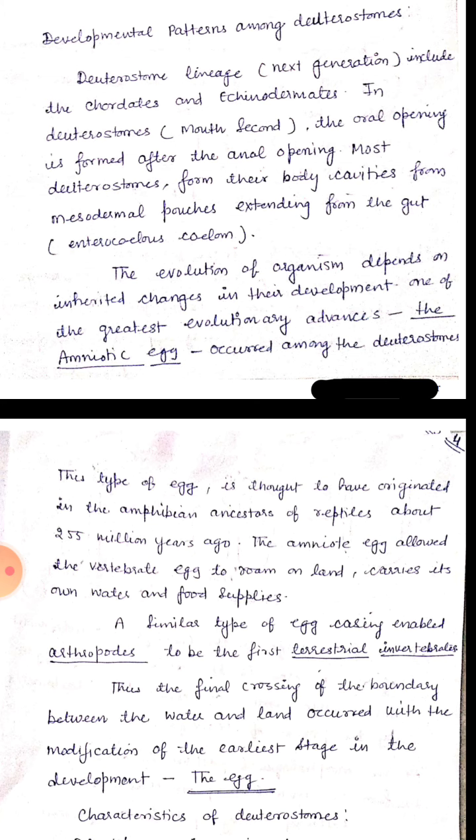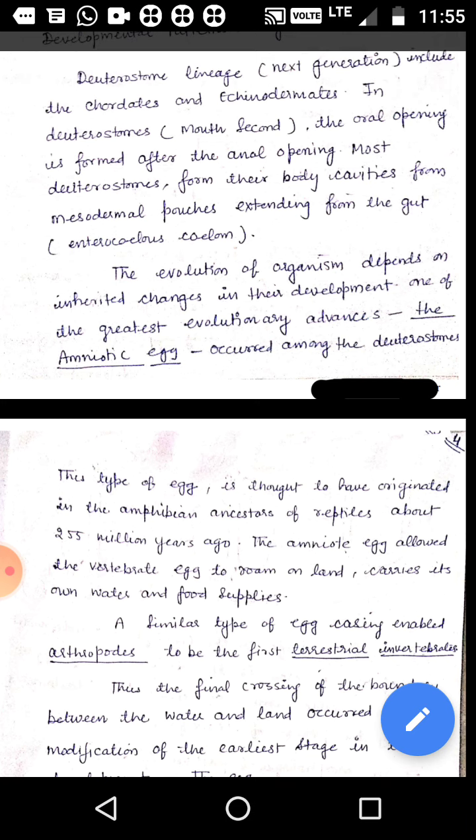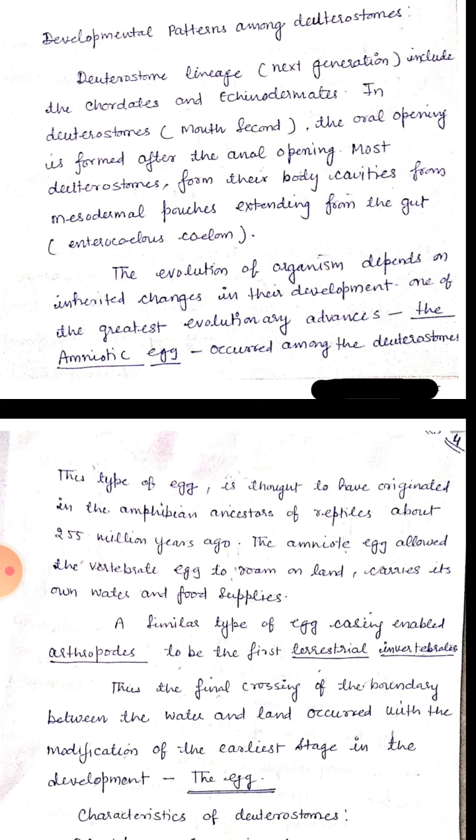The evolution of organisms depends on inherited changes in their development. One of the greatest evolutionary advances, the amniotic egg, occurred among the deuterostomes. In the amniotic egg, development of the organism takes place inside the amniotic cavity. This type of egg is thought to have originated in the amphibian ancestor of reptiles about 255 million years ago. The amniotic egg allowed the vertebrate to roam on land, carrying its own water and food supplies.